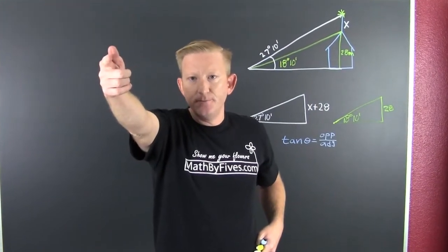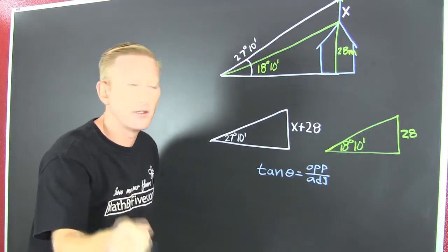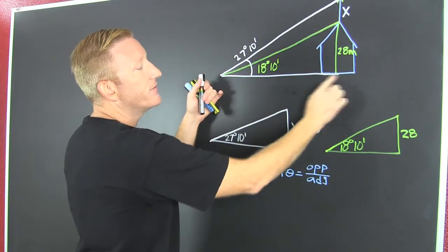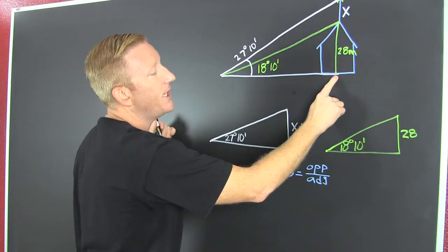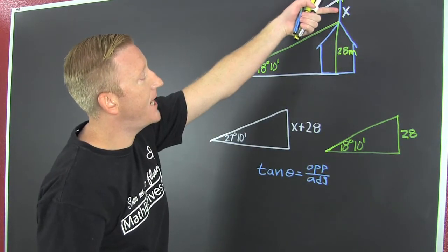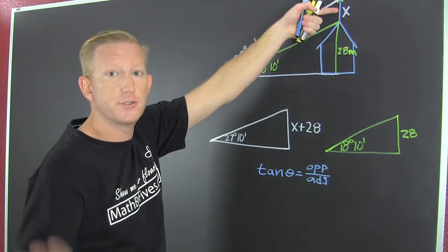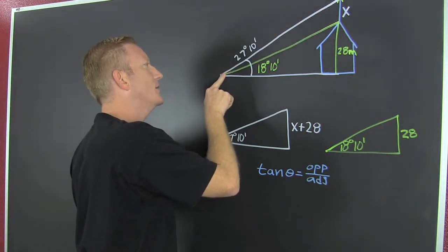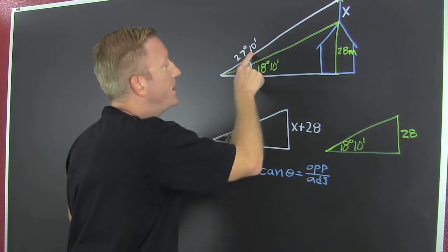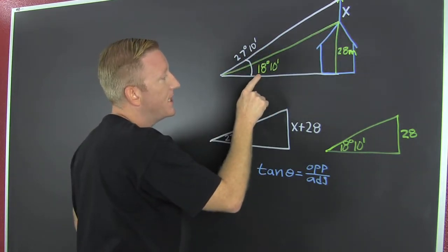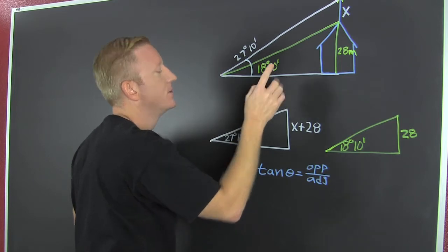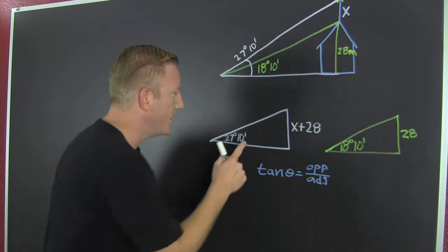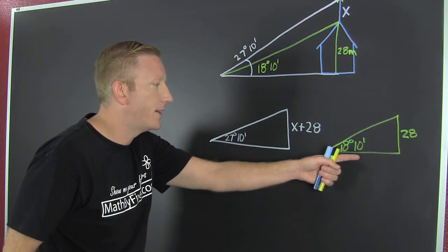So the first thing we want to do is draw a picture. I'm looking at this — the center of the house, 28 feet house, there's a scanner antenna on top of that house. The angle of elevation from out here is 27 degrees 10 minutes, and the angle to the top of the house is 18 degrees 10 minutes. So what does that get us? Two triangles — this white triangle and that yellow triangle.